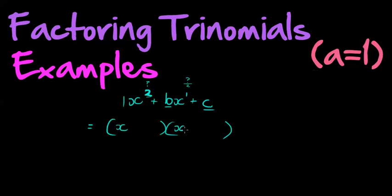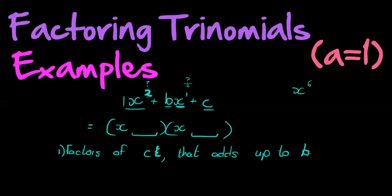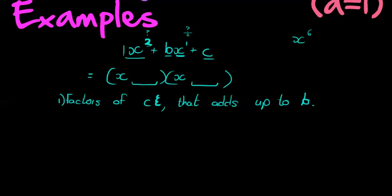I place x times x to give me the x squared term. If it was x to the power of 6, this would be x to the power of 3 times x to the power of 3. In this case it's x squared. Then the next question is: what must I put as the second term in each bracket? We find that by finding factors of C — in other words, what times what gives me C — that adds up to B. Those would be the two numbers I put in.